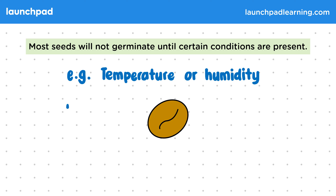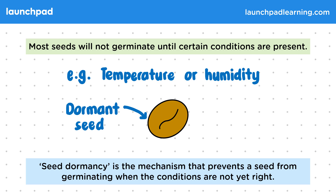This diagram shows a dormant seed that hasn't sprouted yet. Seed dormancy is the mechanism that prevents a seed from germinating when the conditions are not yet right.